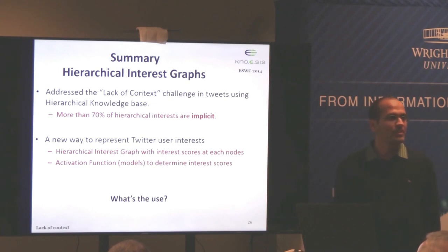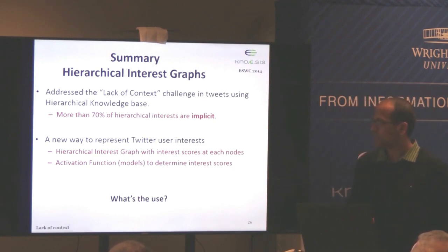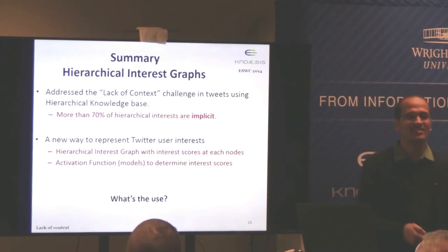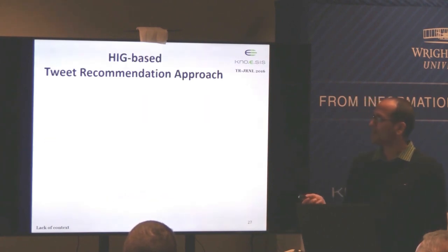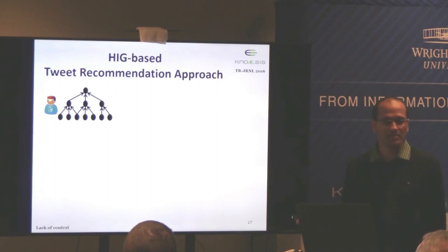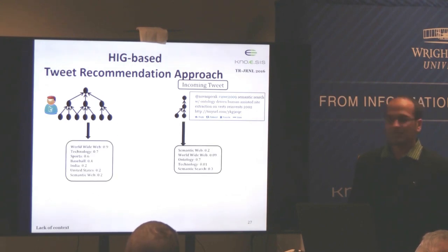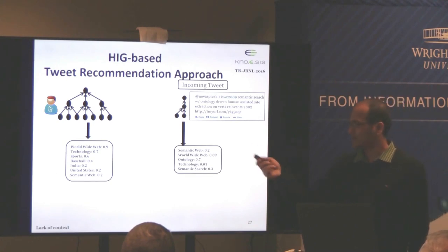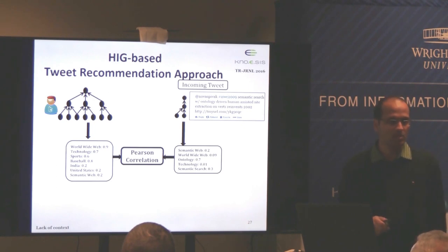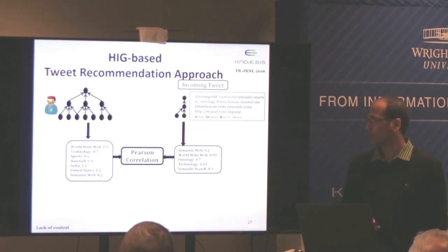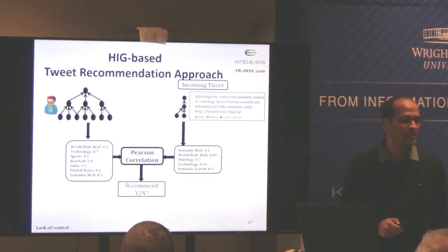What we now have is a hierarchical context for users, where 70% of generated interests were not mentioned in user tweets. We came up with a new way to represent Twitter user interests in terms of hierarchy. We then developed a tweet recommendation approach: generate a hierarchical interest graph for a user based on their tweets, generate a hierarchical context for each incoming tweet using the Priority Intersect activation function, transform these hierarchies to scored interest vectors, and compare them using Pearson correlation to make recommendations.